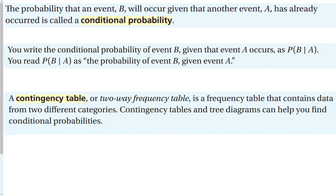What we're talking about is the probability that event B will occur given that event A has already happened. That's what is called conditional probability. Something has to happen first — I'm telling you it happens first — and then we ask what's the probability that this other thing happened. We write the conditional probability of event B given event A as P(B|A), where that vertical line means 'given.'